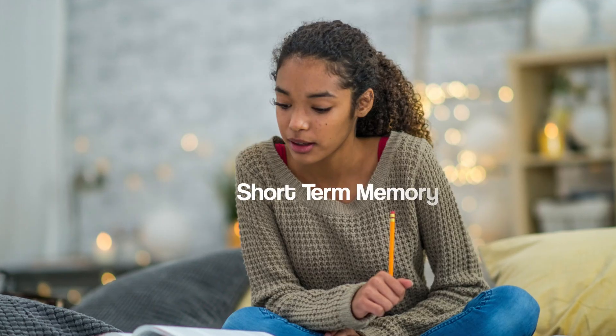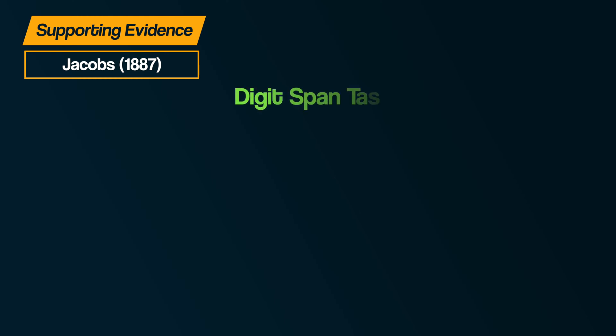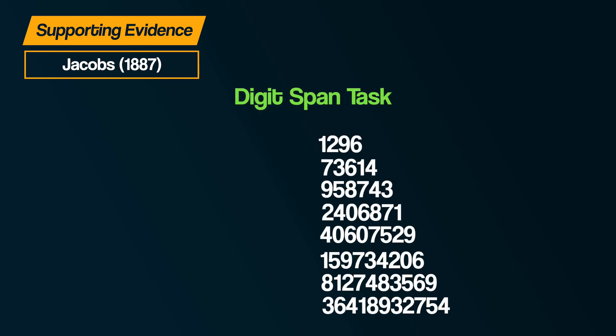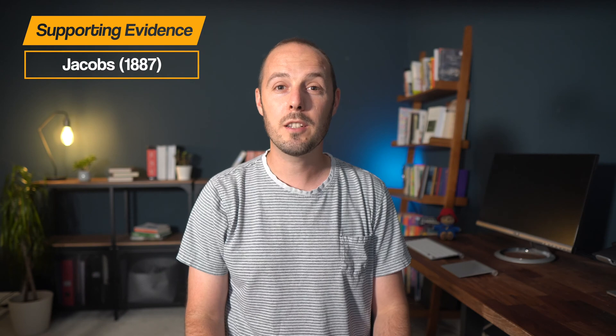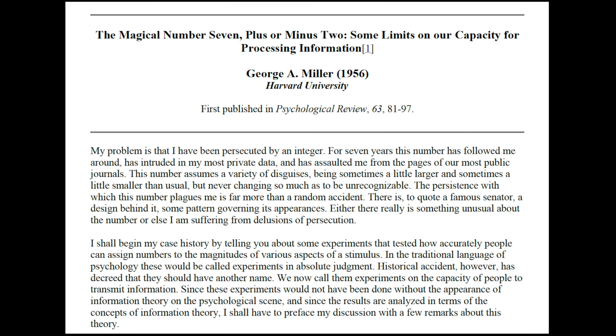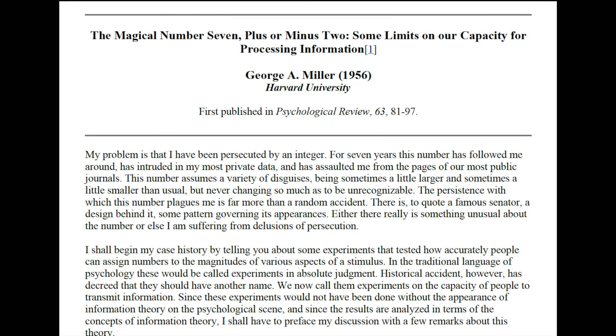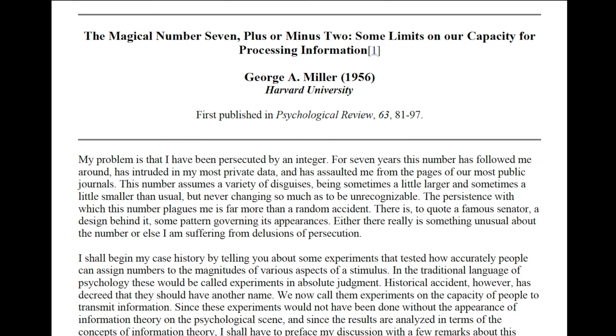For example, Jacobs in 1887 conducted laboratory experiments into short-term memory. Participants were presented with a digit span task, which required them to repeat back a series of numbers or letters, with the length increasing by one each time. Jacobs found that the average capacity of short-term memory for letters was 7.3 and for numbers 9.3. Miller in 1956, in summarising the research into the capacity of memory, proposed the magic number 7, suggesting that the capacity of short-term memory is 7 plus or minus 2.